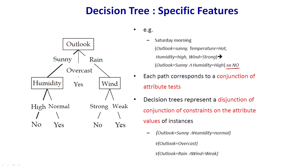Each path corresponds to a conjunction of attributes. If it is sunny and humidity is high, the answer is no. If it is sunny and wind is strong, the answer is also no. Only overcast is different — it does not consider humidity or wind; it completely says yes. Sunny and rainy are both long interlinked branches, and these entities represent a disjunction of conjunctions — a conjunction of constraints on the attributes.